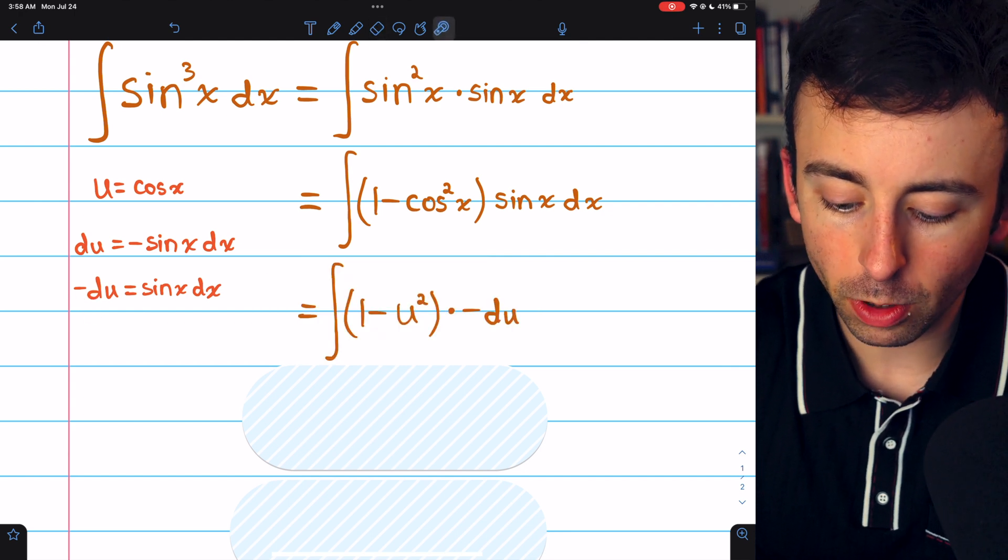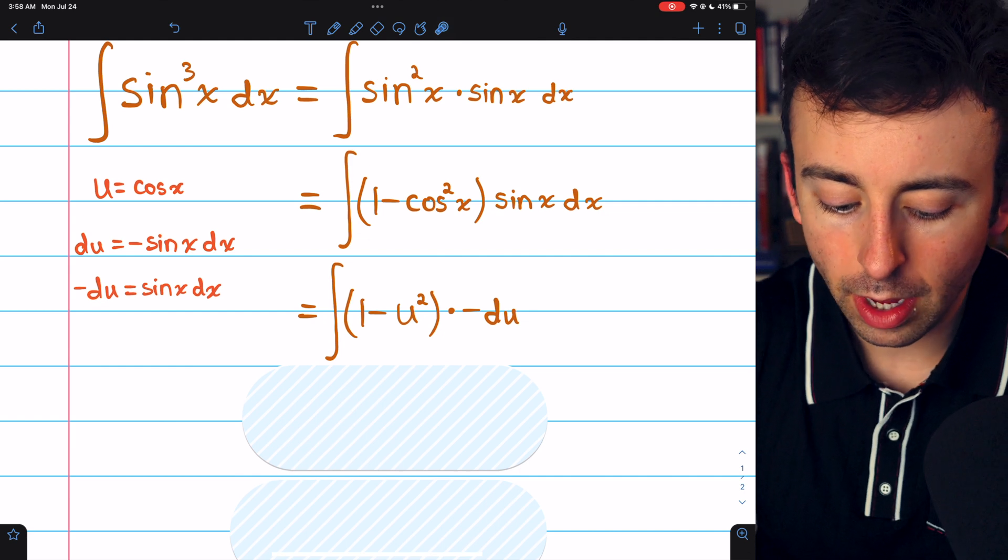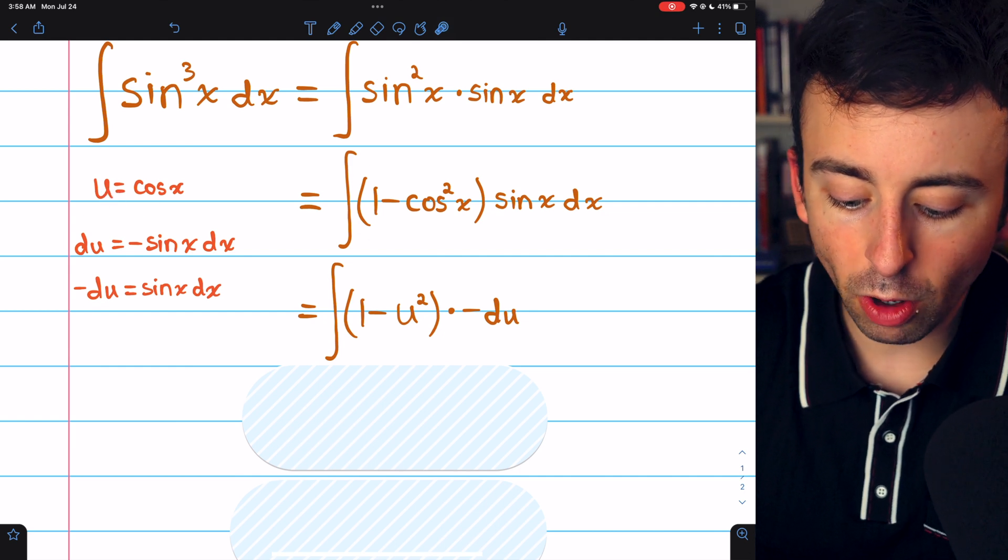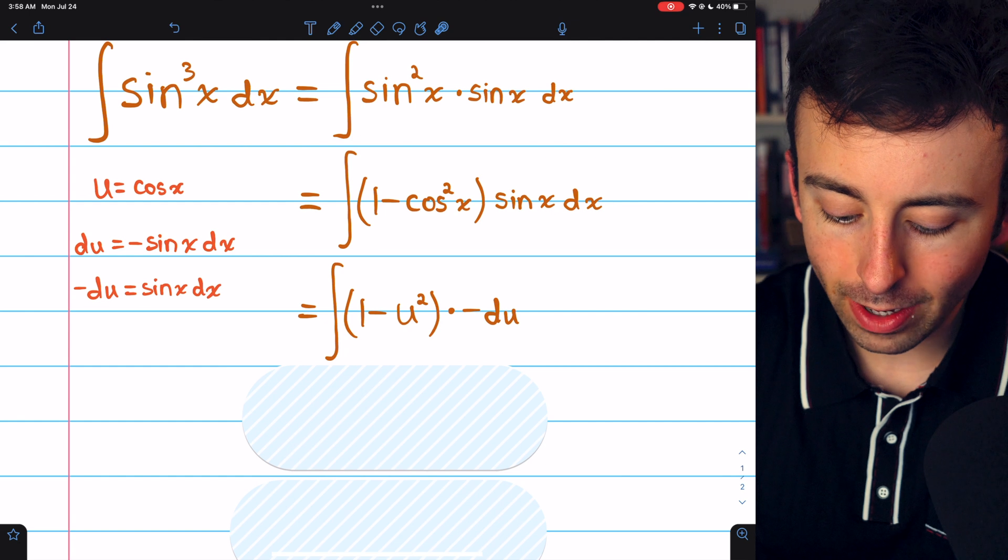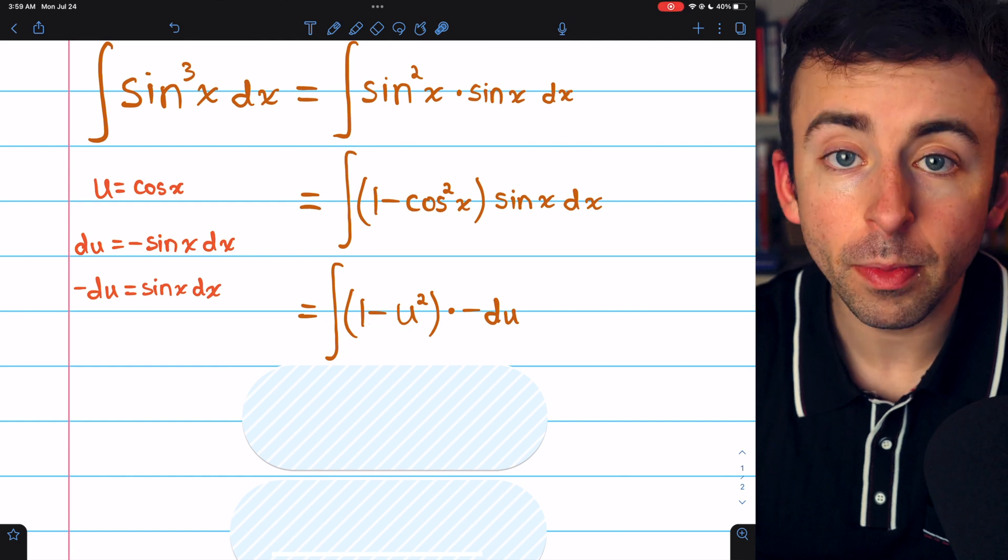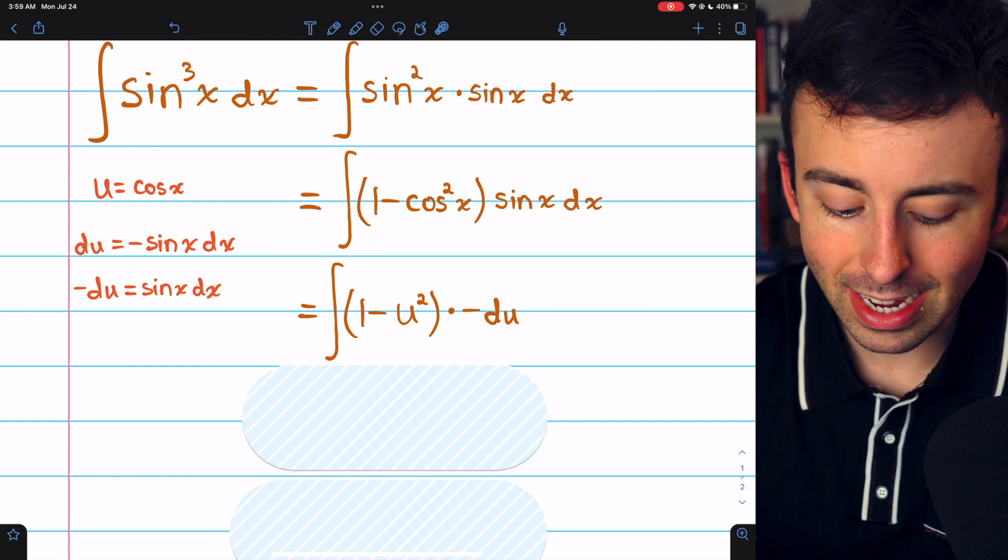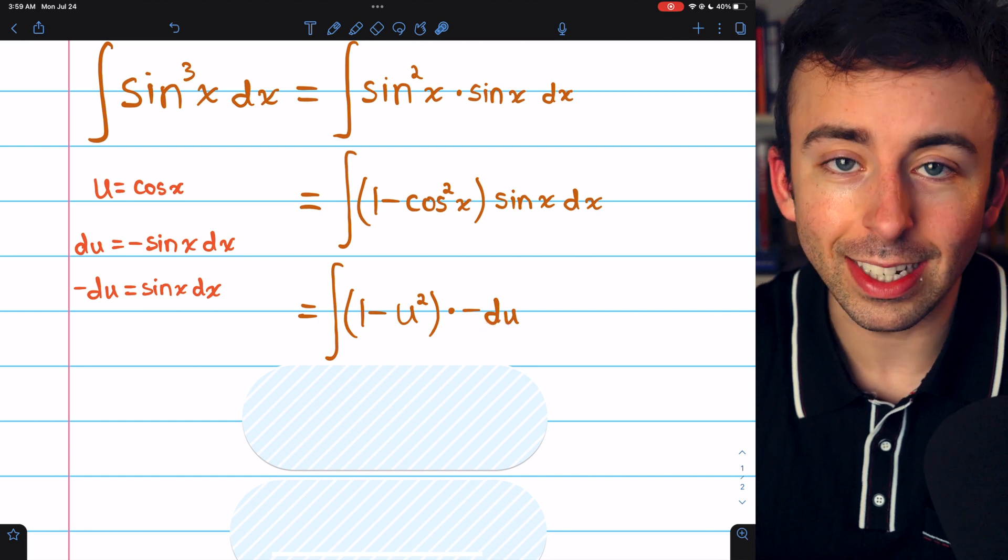Then we can rewrite our integral entirely in terms of u. u is cosine, so one minus cosine squared is one minus u squared. And of course, sine x dx is negative du.